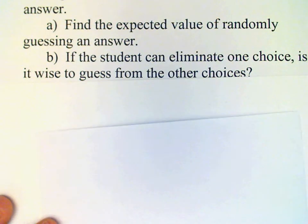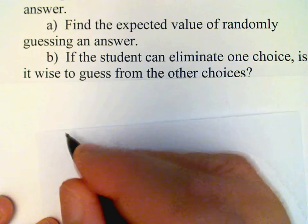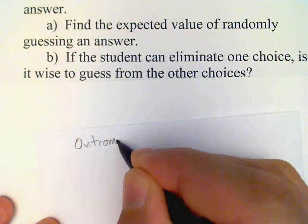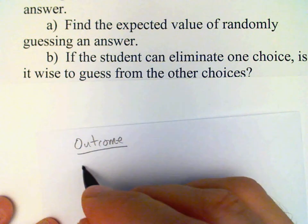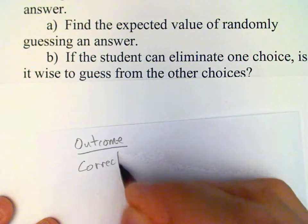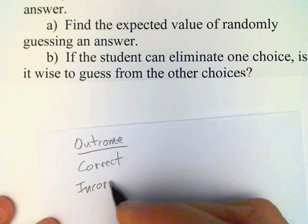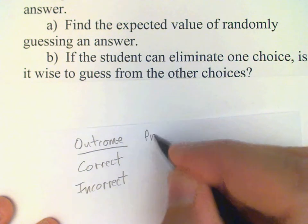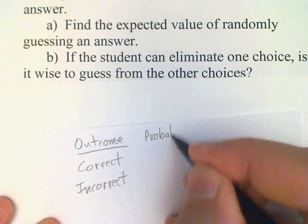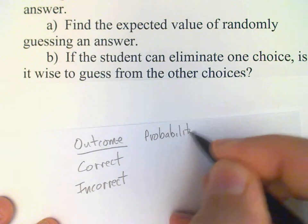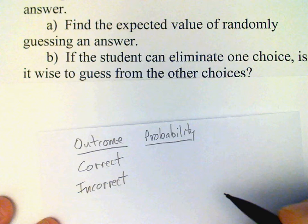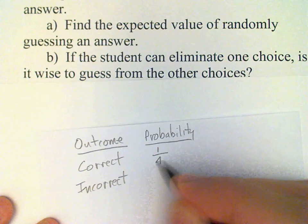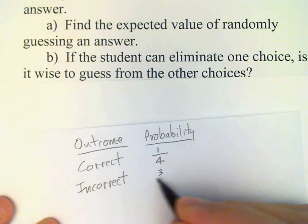We have a similar problem. Again we have an outcome which may be correct or it may be incorrect, and we have probabilities and values again. The probability of a correct guess now is one out of four because we've eliminated one of the choices. Incorrect, three out of four.